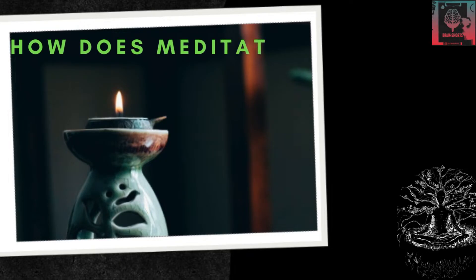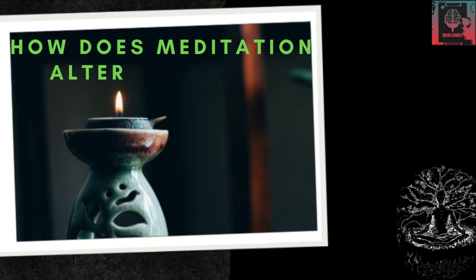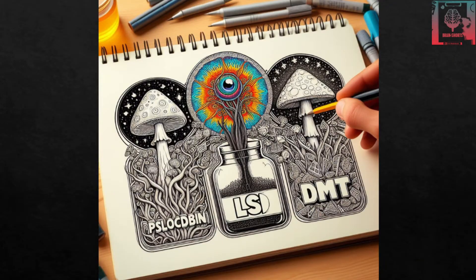How does meditation alter states of consciousness? Meditation is another practice that can alter the states of our consciousness, similar to taking psychedelics or being in a flow state. Our brain undergoes changes in particular areas, allowing us to access different stages of our consciousness and experience reality in an extraordinary way.